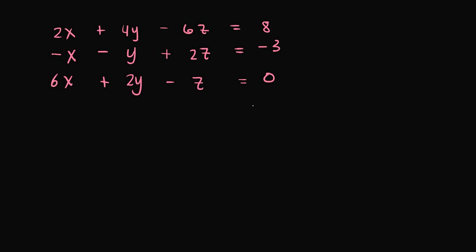In this example, we're given a system of linear equations, and we want to write the coefficient matrix for this system. A coefficient matrix is simply a matrix of only the coefficients. So the left-hand side includes all of the unknown variables as well as their coefficients. On the right-hand side, we have all the constant terms. In an augmented matrix, we would include both sides of these equations, but in a coefficient matrix, we only include the left-hand side.